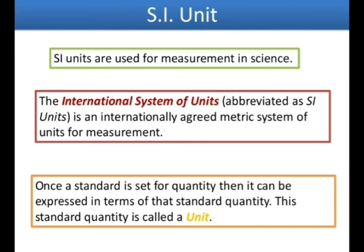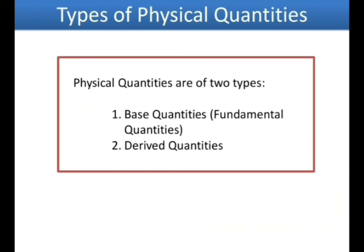Although there are other units to measure these fundamental quantities, some other systems of measurement also exist. For example, the MKS system and CGS system. In the MKS system, M stands for meter, K stands for kilogram, and S stands for second. In the CGS system, C stands for centimeter, G stands for gram, and S stands for second. For now, however, we are focusing on the SI system of measurement only, and we are using the SI system for our calculations as well.